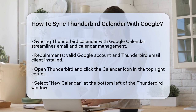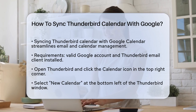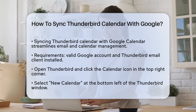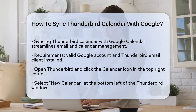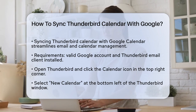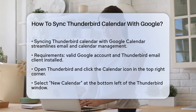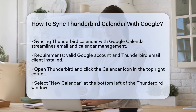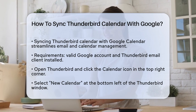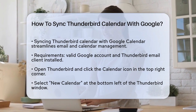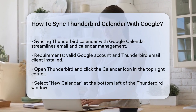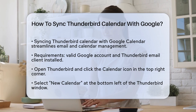First, you need a few basic things: a valid Google account and the Thunderbird email client installed on your computer. Once you have these, you're ready to start. Open Thunderbird and click on the Calendar icon near the top right of the app window. This will take you to the Calendar section of Thunderbird.